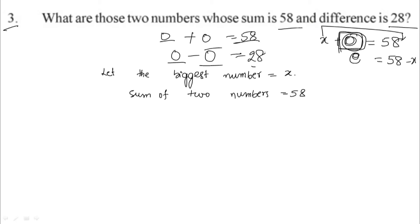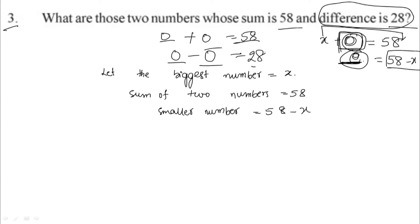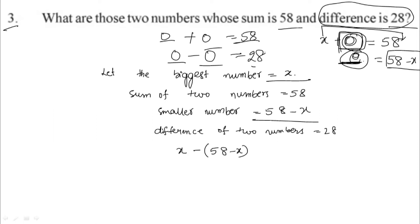So the smaller number is 58 minus x. We have the condition that the difference is 28. The bigger number is x and the smaller number is 58 minus x. So the equation is: x minus (58 minus x) equals 28.